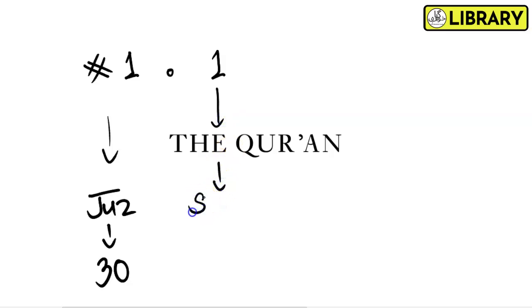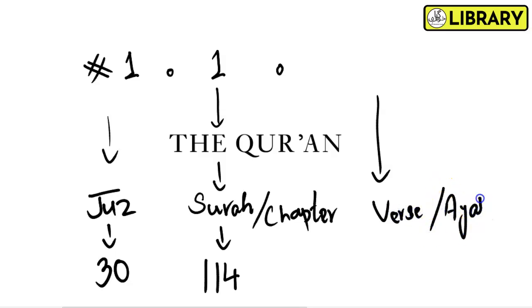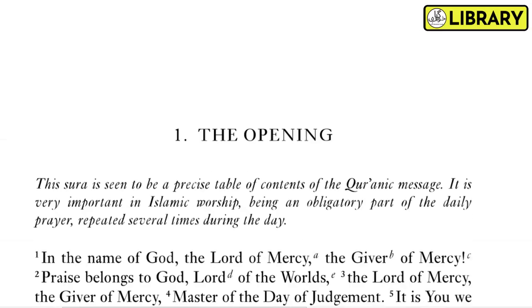After a period, I'll put another number for the Surah. There are 114 Surahs — 114 sections or chapters in the Quran. After that, there would be another number for the verse, which is the Ayah. So if we do five Ayahs, I'd be writing something like one to five.